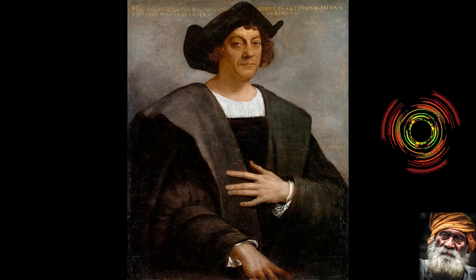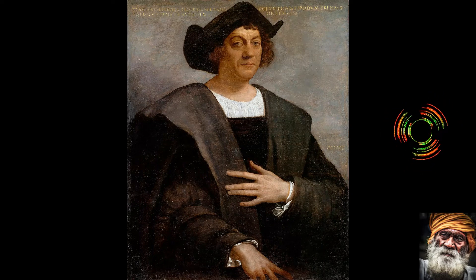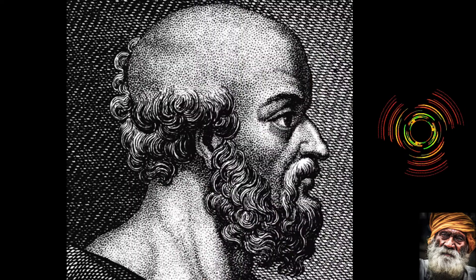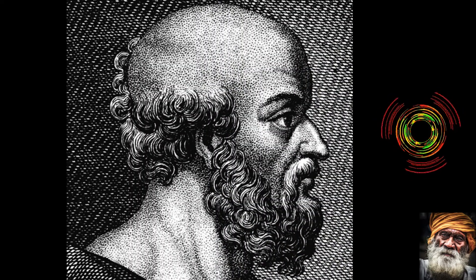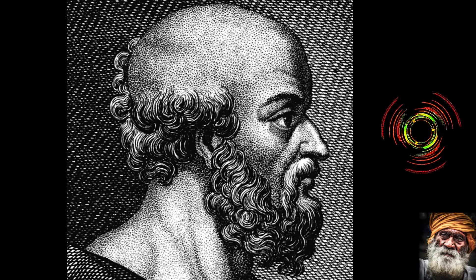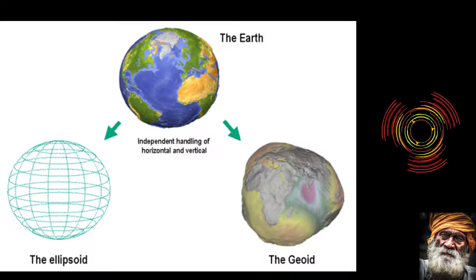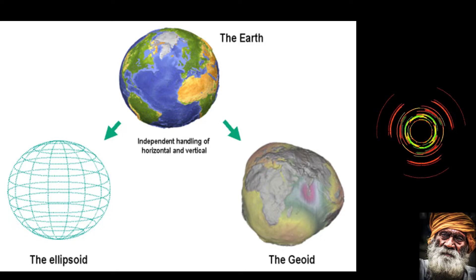So as a child I learned that it was Columbus who discovered that the world was not flat. But they should have told me about Eratosthenes, the Greek scholar of the third century BC, great scientist and father of geography, who was able to not only determine that the Earth was not flat but also to measure the circumference of the Earth within a reasonable degree of accuracy.